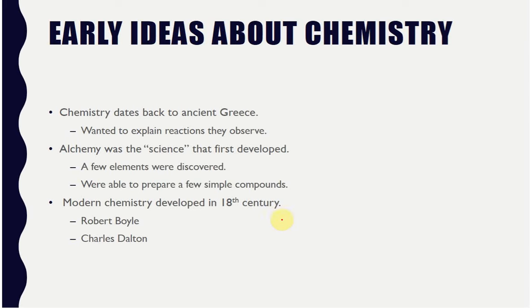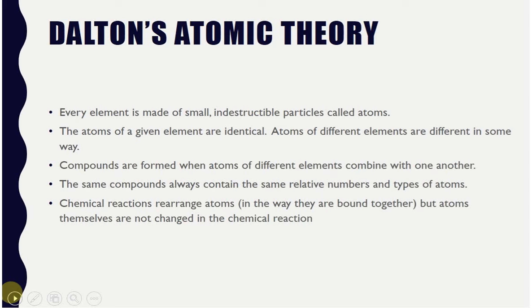And so really, our modern chemistry didn't begin until the 1700s. And really, Robert Boyle is given most of the credit for being the first chemist. Now, it all came about after some experiments with Boyle and a few others.